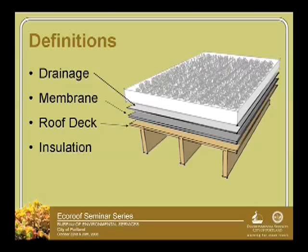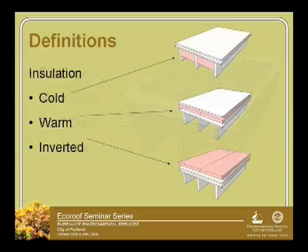One thing we noticed about our graphics is that we've been showing this in terms of some kind of joist system. Just imagine that this could as well be concrete or some other kind of roof — it was just for the drawing. We're not saying all roofs are like that, especially when we talked about insulation being on the interior of a building. We don't have an arrow for the insulation because it can go in three different places: cold, warm, and inverted, as Dave said.